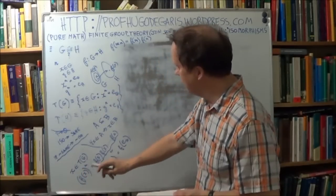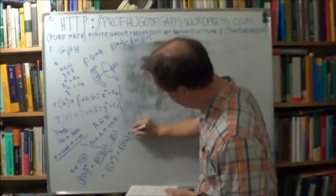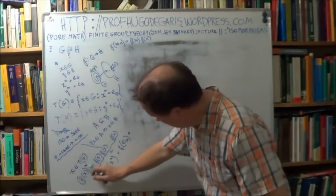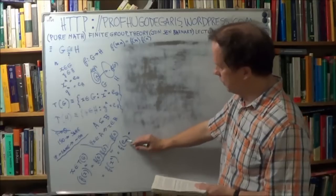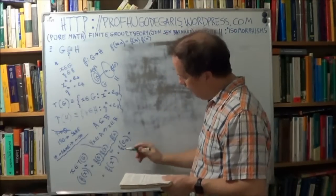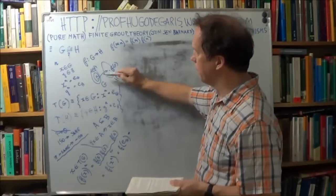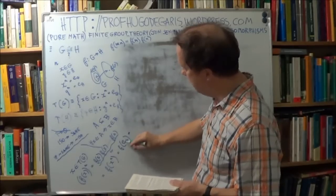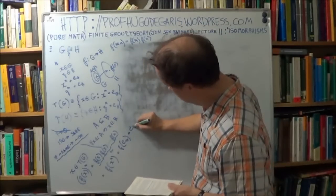Now, x^n equals e, the unit element of group G, since x belongs to t(G). So we can write this as f(e_G). And recall a theorem from not so long ago: if the groups are isomorphic, then the unit element of G maps to the unit element of H. So f(e_G) = e_H.